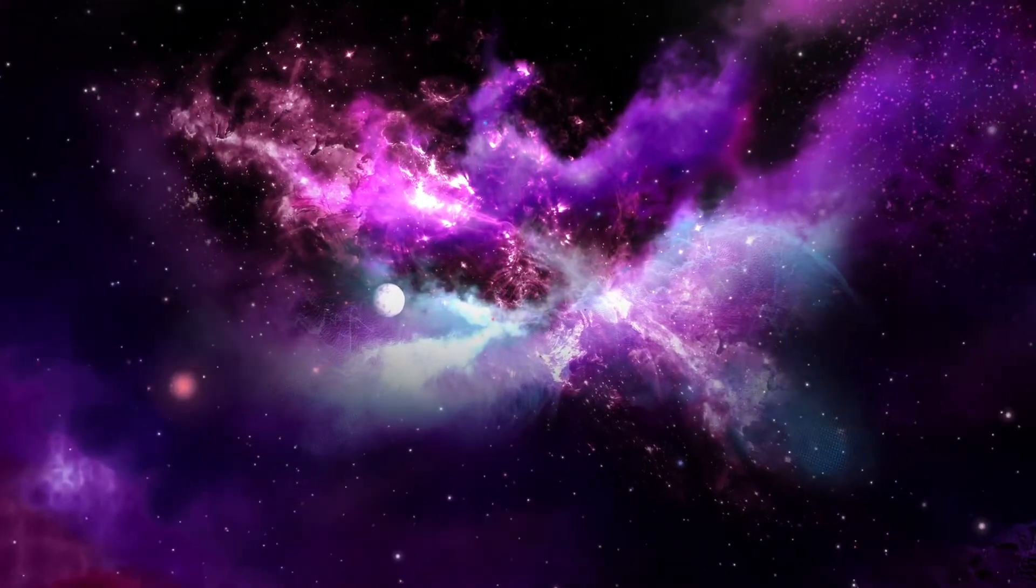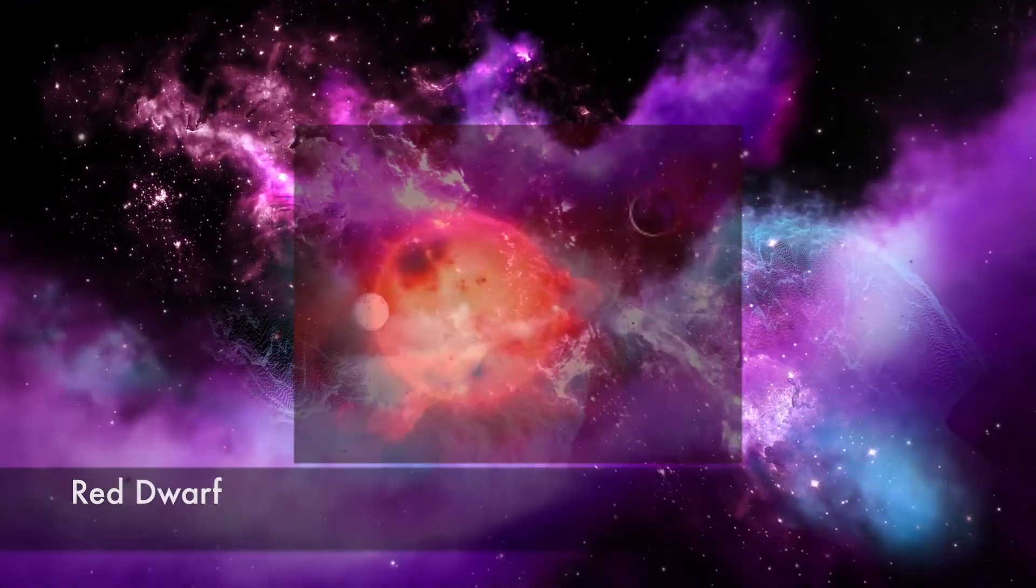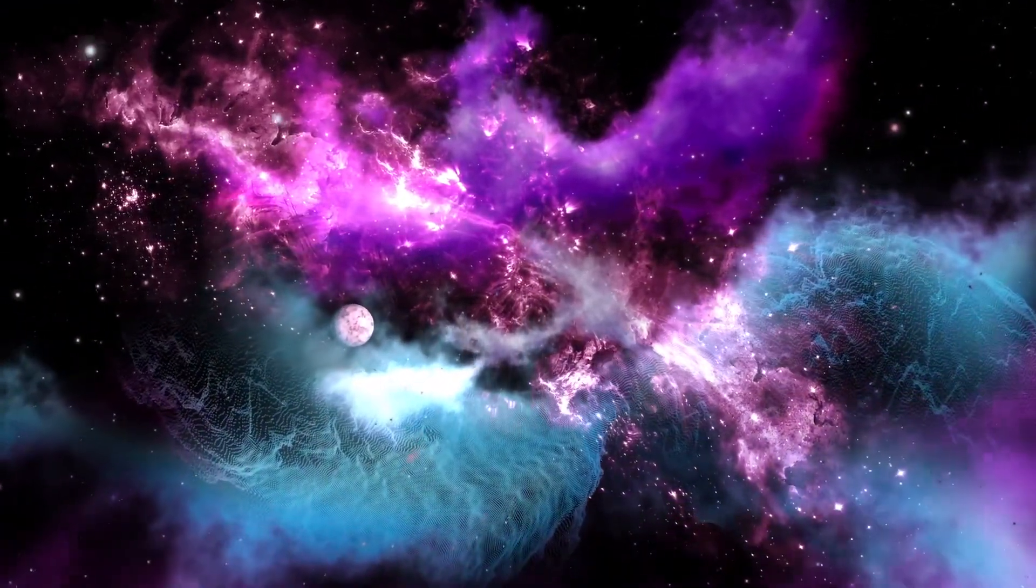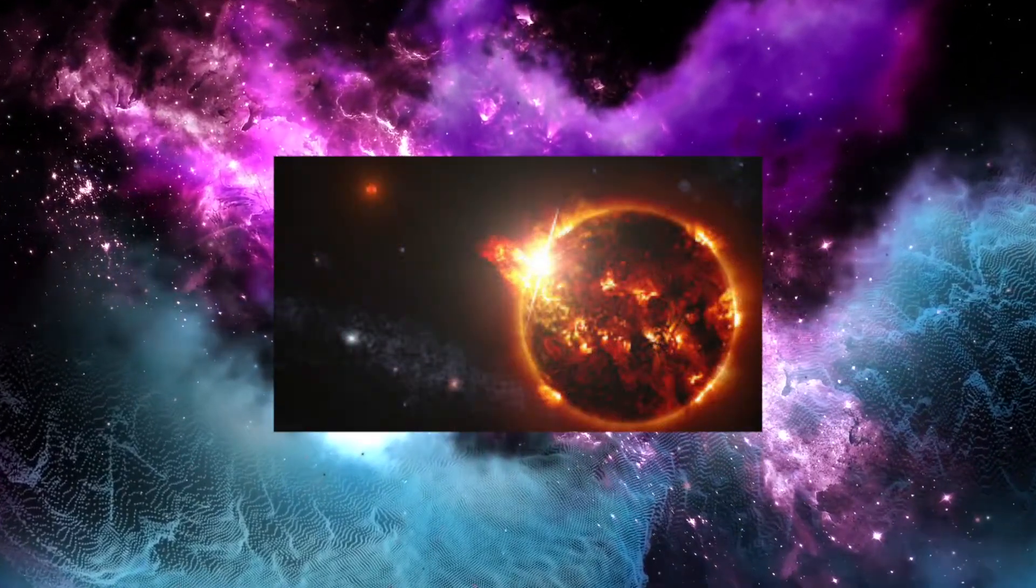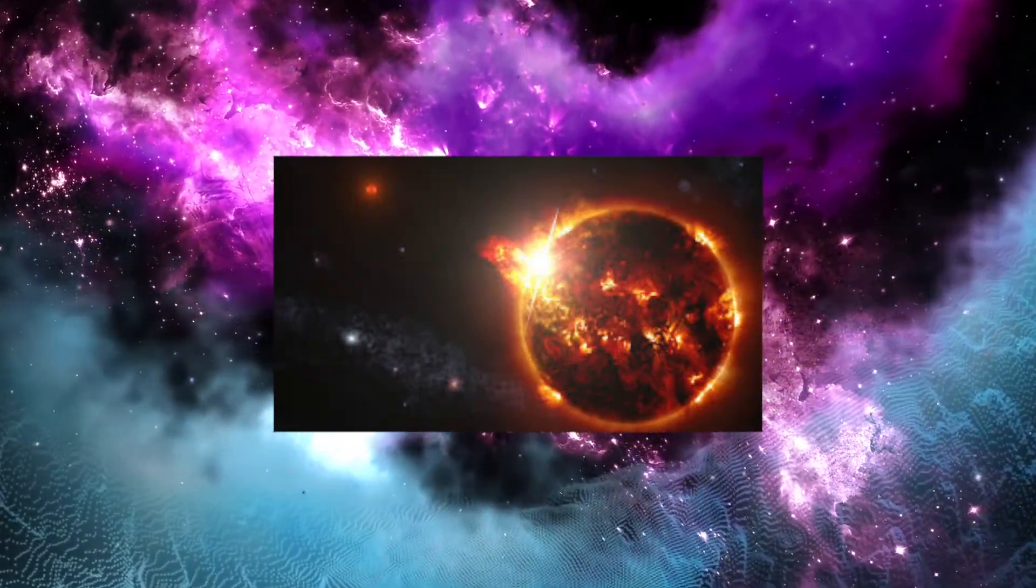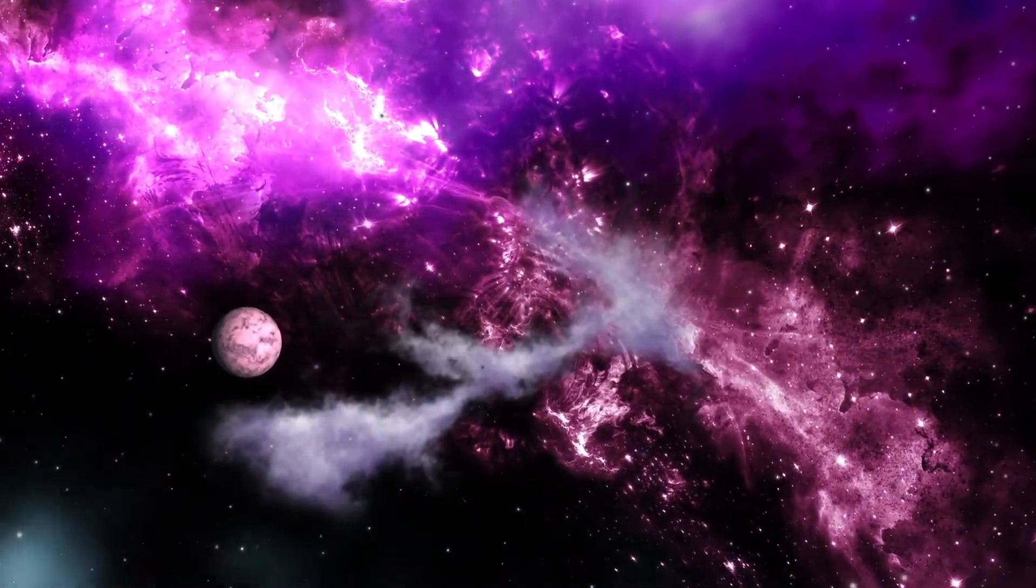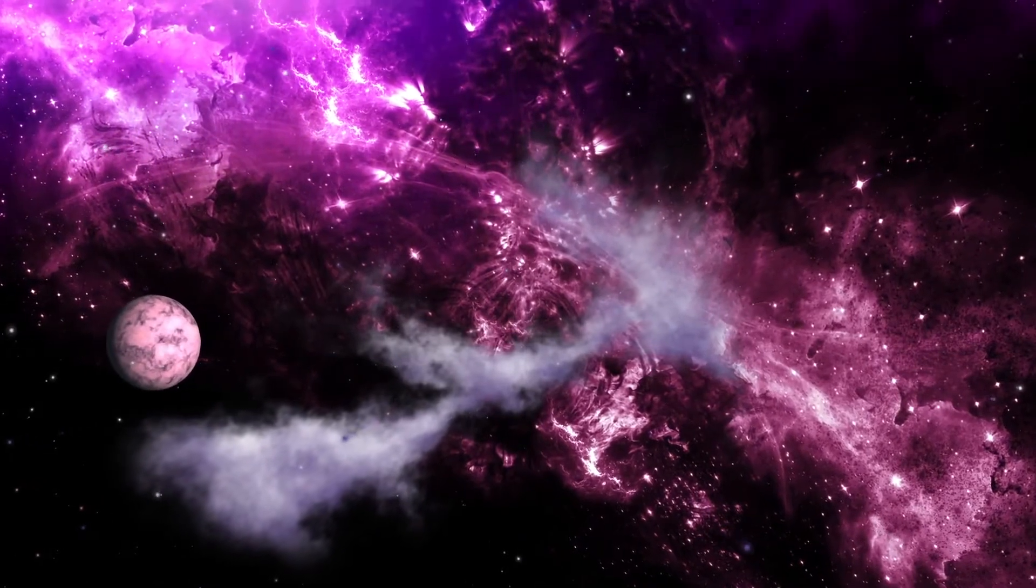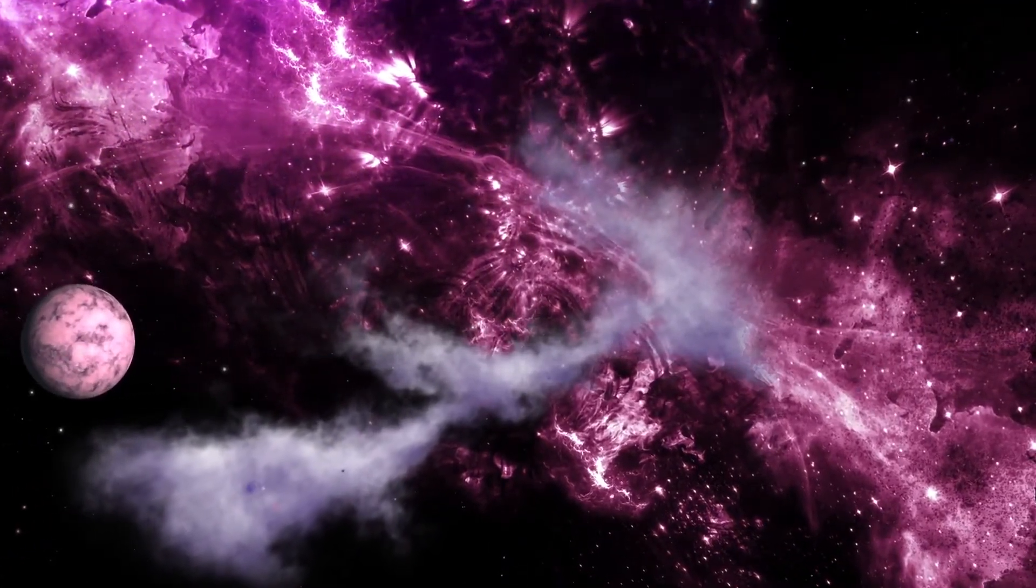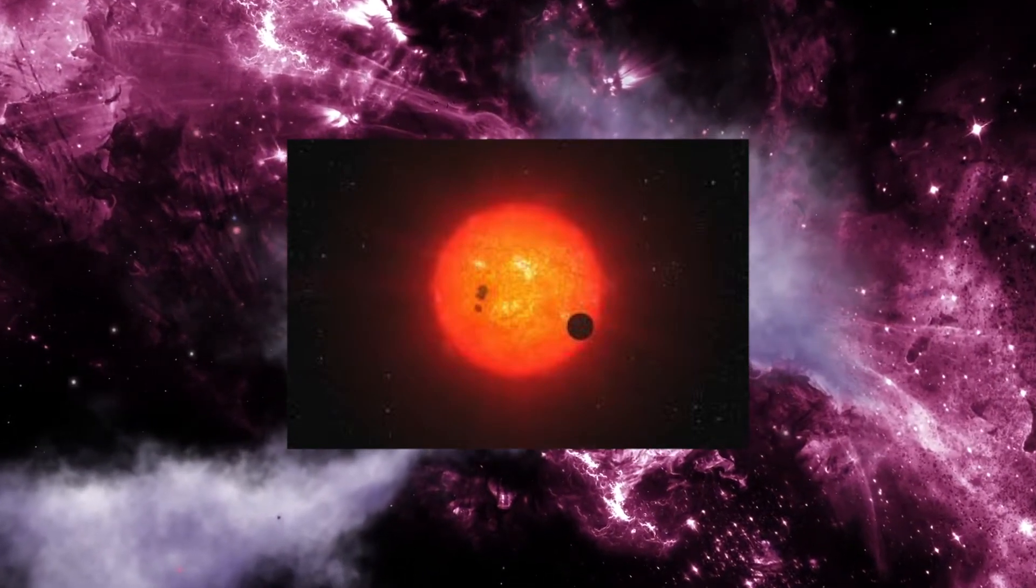A red dwarf is the smallest and coolest kind of star. Red dwarfs are by far the most common type of star in the Milky Way, but they have low luminosity. This is critical because one of the biggest obstacles to habitability around red dwarf stars is that they can emit a lot of high energy flares and radiation that could fry a planet and any life on it.